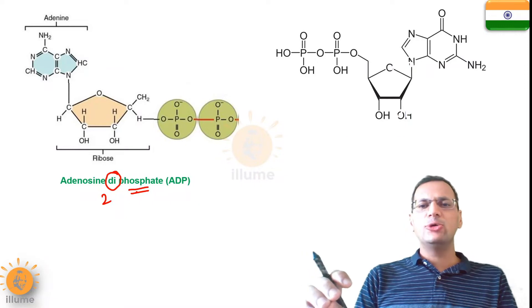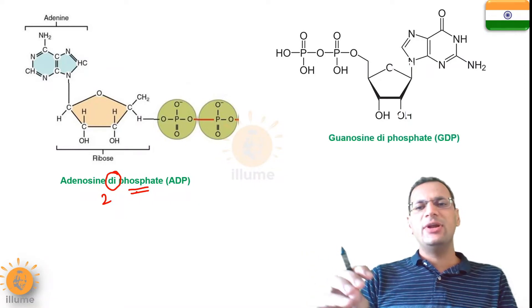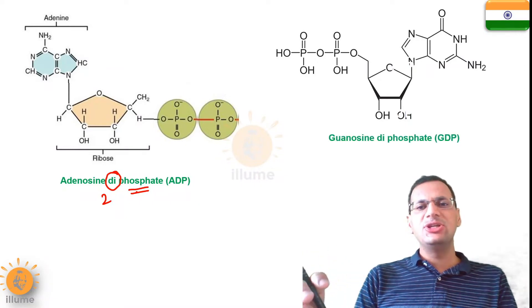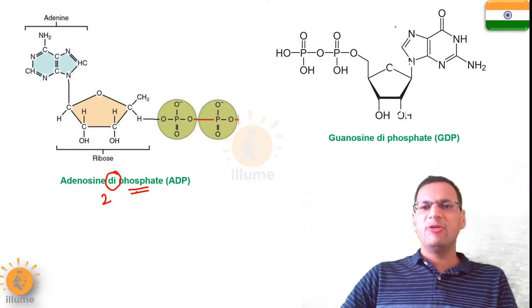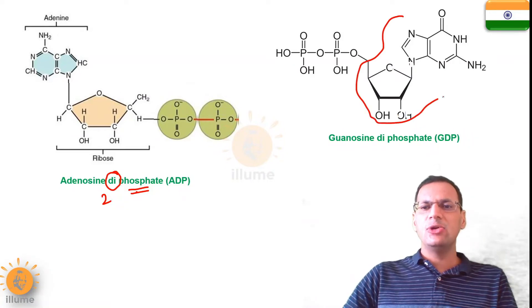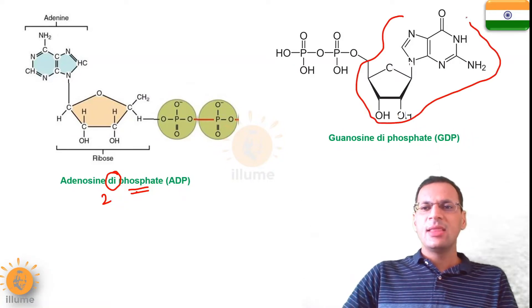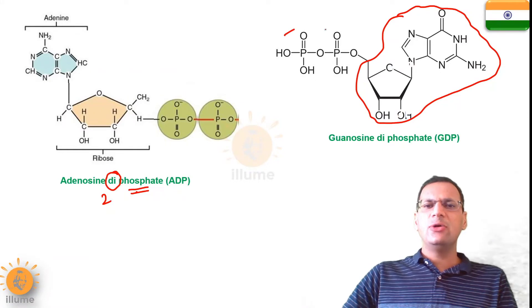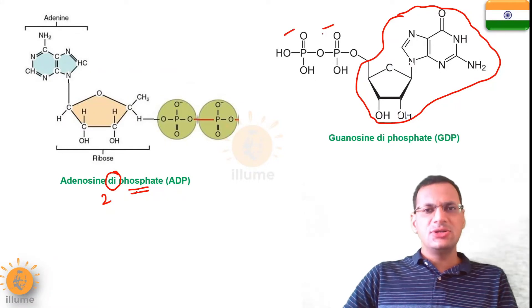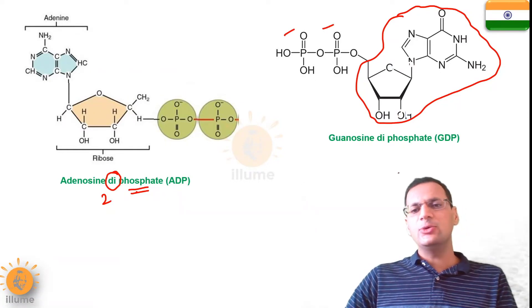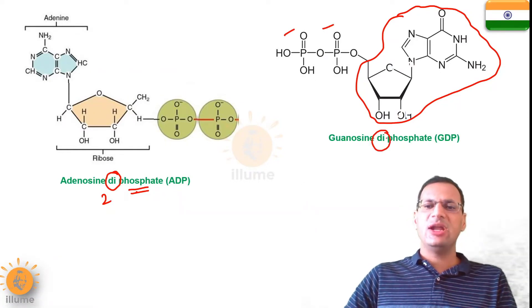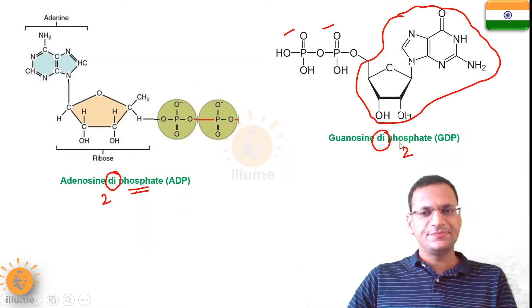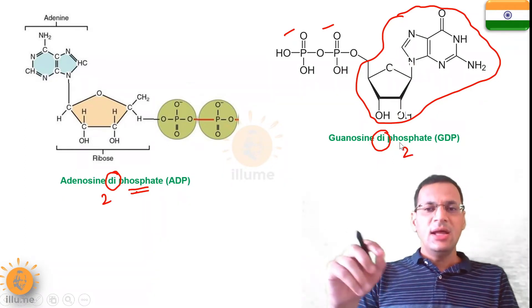Similarly, the second example is guanosine diphosphate, that is GDP. This is the guanosine molecule — again a nucleoside — and on this nucleoside two phosphate groups are attached, so we use the word diphosphate.